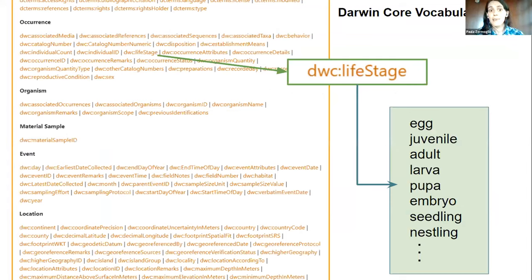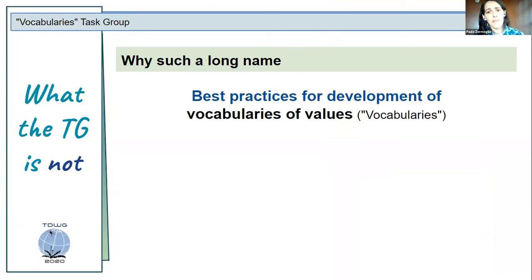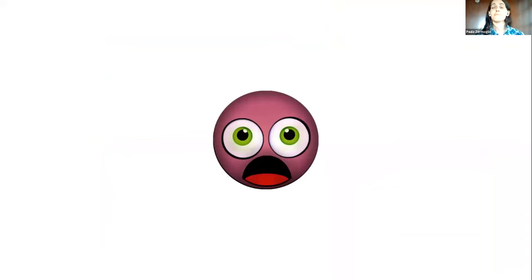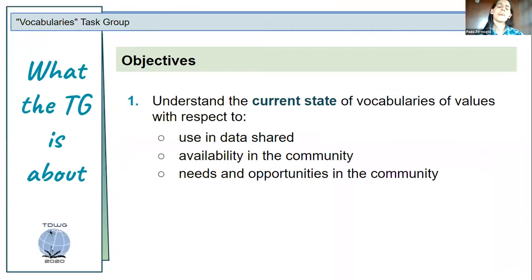So we're talking about the values we want to use. The first part of the name — 'best practices for development' — means the task group was not tasked with developing the vocabularies of values themselves, but to tackle the best practices to do it. Many of you might be thinking: 'what am I doing here if these people aren't actually building vocabularies?' But let me tell you about our objectives so we can understand how this relates to the bigger picture.